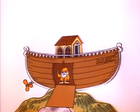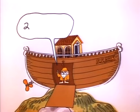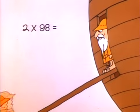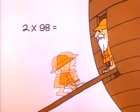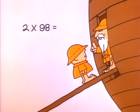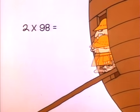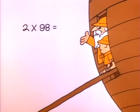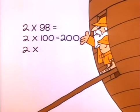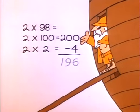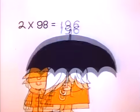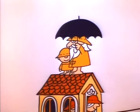Now, what's two times ninety-eight? Aw, that's hard! No, it's very simple — two times ninety-eight equals two times a hundred minus two times two. That's two hundred minus four — a hundred and ninety-six. Elementary!